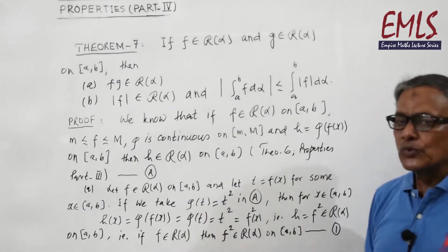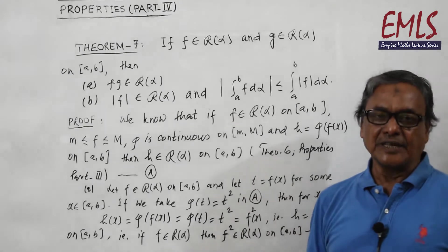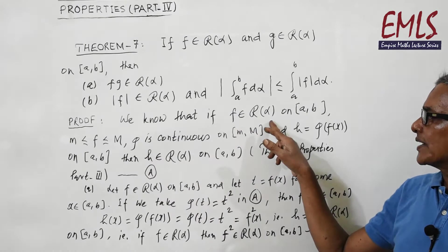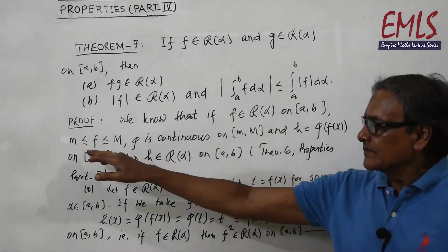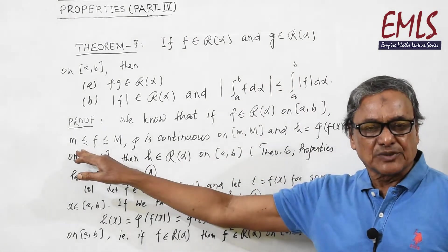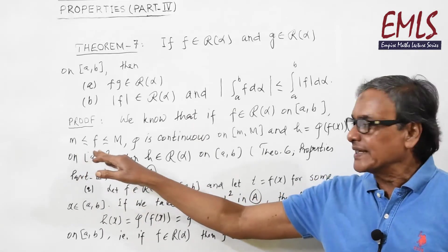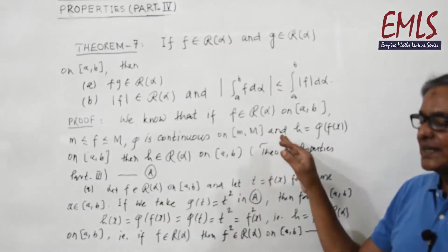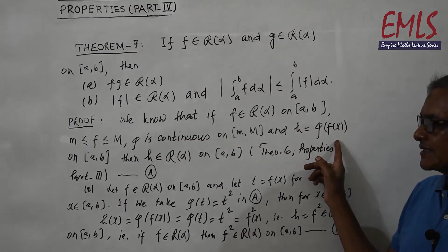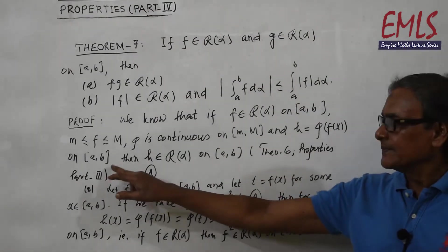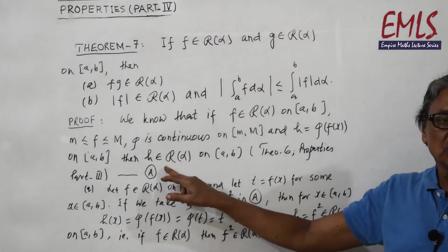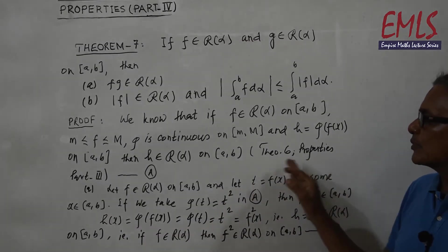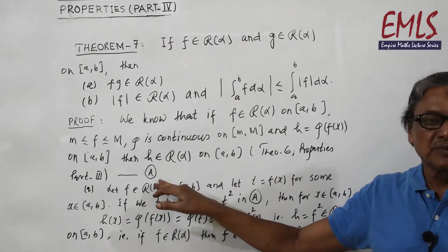Proof: We have already proved in theorem number 6 in properties part 3 that if f belongs to Rα on [a, b], m ≤ f ≤ M, φ is continuous on [m, M], and h = φ(f(x)) on [a, b], then h belongs to Rα on [a, b]. This is referred to as statement A.